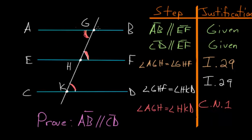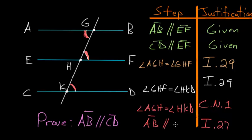Looking at lines AB and CD, angles AGH and HKD are alternate angles, and since they are equal, they prove that lines AB and CD are parallel, by Book 1, Proposition 27. This is exactly what we wanted to prove, so we end with QED.